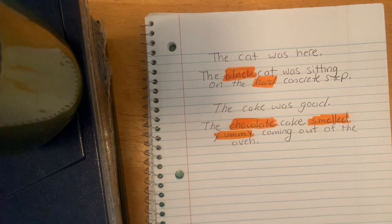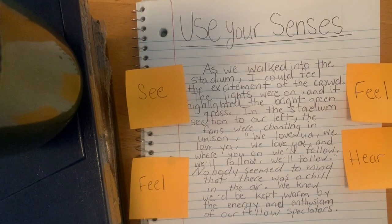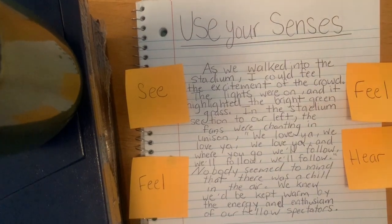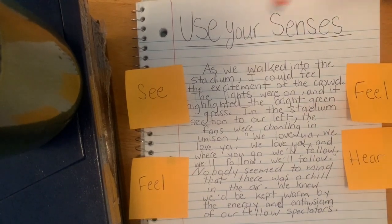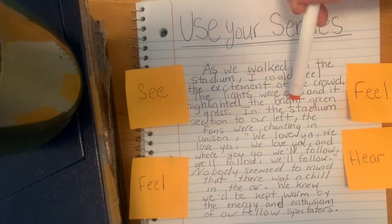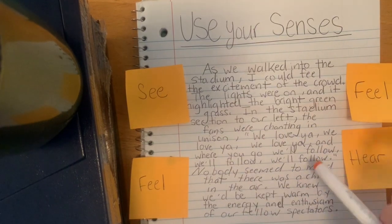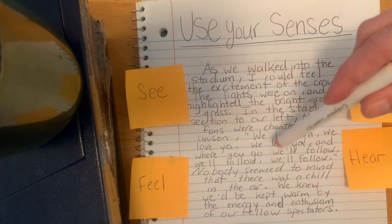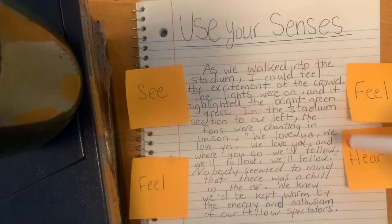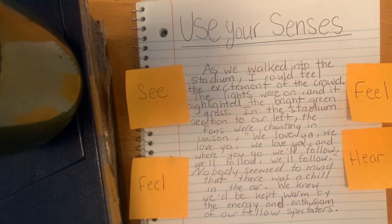Here's another really good example I found — I believe it's about a baseball game. I really miss sports, so I thought it'd be a good one. Look for the sensory words while I read: 'As we walked into the stadium, I could feel the excitement of the crowd. The lights were on and highlighted the bright green grass. The fans were chanting in unison: We love you, we love you, we love you. Nobody seemed to mind that there was a chill in the air — we knew we'd be kept warm by the energy and enthusiasm of our fellow spectators.'